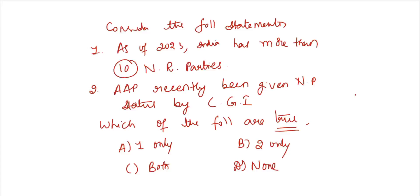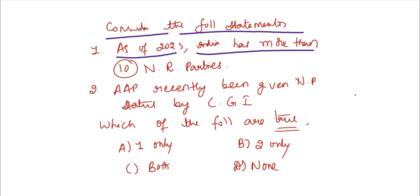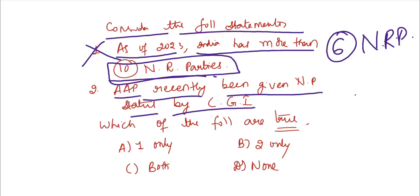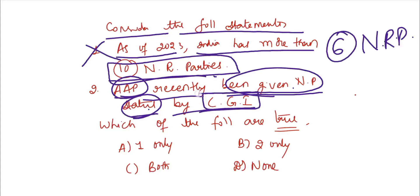I will look at the question and answer. Consider the following statements. As of 2023, India has more than 10 national recognized parties. As of now, six nationally recognized political parties are known. So obviously the statement is wrong. They have been given national party status — this is a trap point. The status is not given by the Central Government of India.